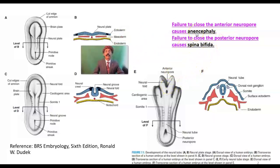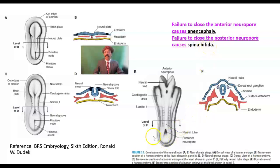The upper part of the head will be missing — the roof of the head, the vault of the skull, will be missing. Failure to close the posterior neural pole causes spina bifida, meningocele, myelomeningocele, and may even result in spina bifida occulta.